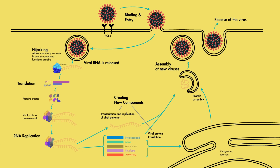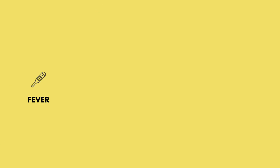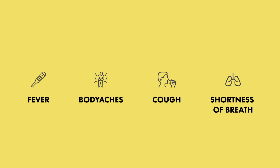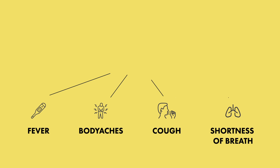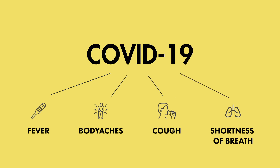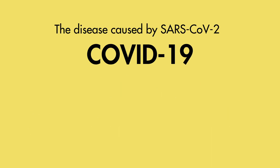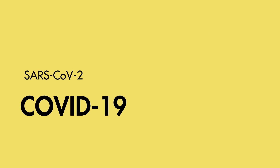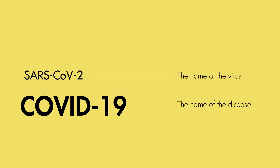When enough cells are infected, we start to feel symptoms of fever, body aches, cough, and shortness of breath. We've given a name to this constellation of signs and symptoms, and that's COVID-19 — the disease caused by SARS-CoV-2. And even though these terms are often used interchangeably, they don't refer to the same thing: SARS-CoV-2 is the name of the coronavirus, and COVID-19 is the name of the disease when the virus infects humans.